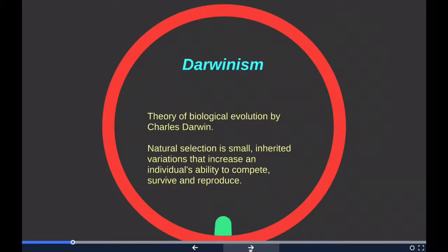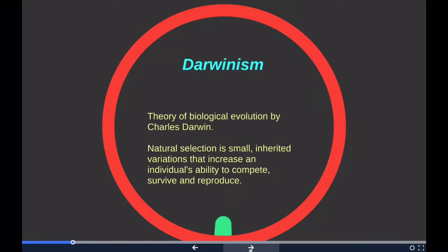Darwin published his theory of evolution with compelling evidence in his 1859 book On the Origin of Species, overcoming scientific rejection of earlier concepts of mutation of species. By the 1870s, the scientific community and much of the general public had accepted evolution as a fact. It was not until the emergence of the modern evolutionary synthesis from the 1930s to the 1950s that a broad consensus developed in which natural selection was the basic mechanism of evolution. Darwin's scientific discovery is a unifying theory of the life sciences explaining the diversity of life, and natural selection is one of the cornerstones of modern biology.